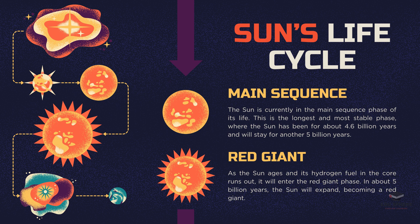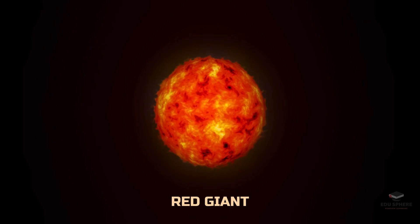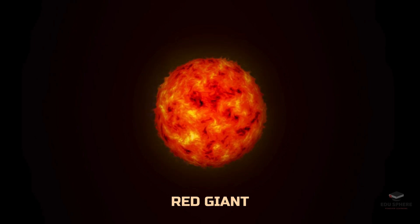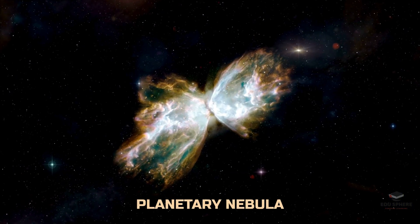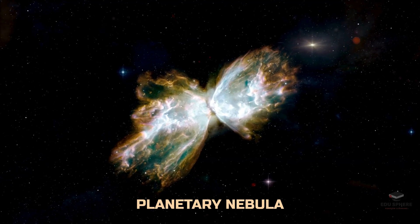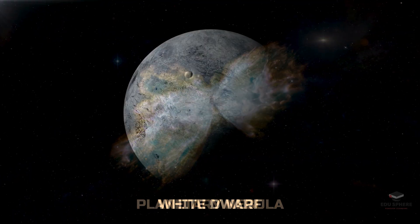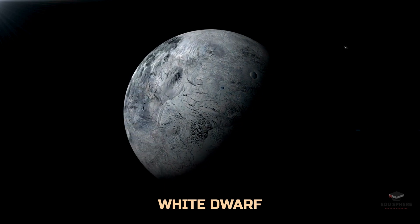As the Sun exhausts the hydrogen fuel in its core, it will evolve into a red giant in approximately 5 billion years. After the red giant phase, the Sun will start fusing helium into heavier elements like carbon. Once the helium is exhausted, the Sun will shed its outer layers, creating a beautiful structure called a planetary nebula. Unlike more massive stars, the Sun doesn't have enough mass to become a neutron star or a black hole — instead, it will eventually become a white dwarf, the hot, dense core left behind.